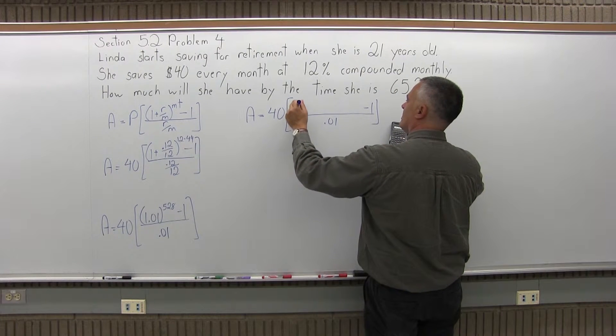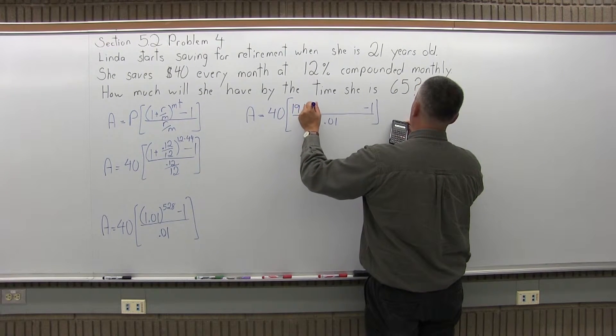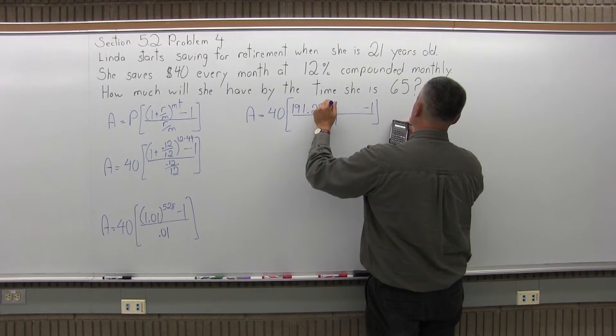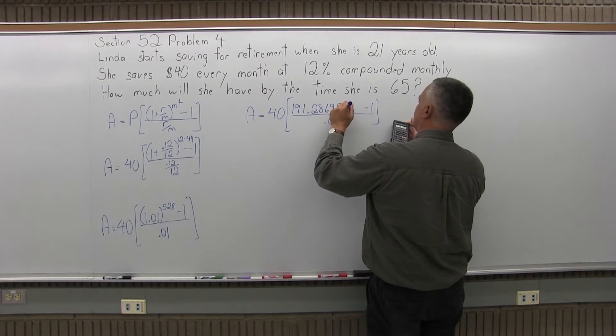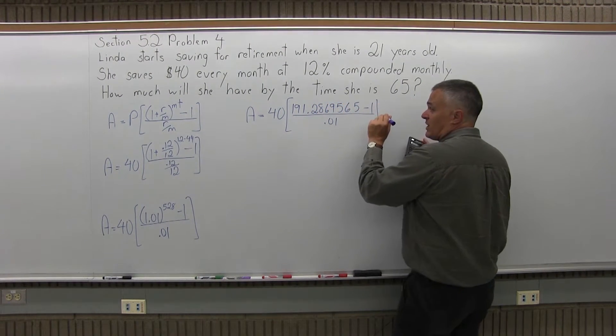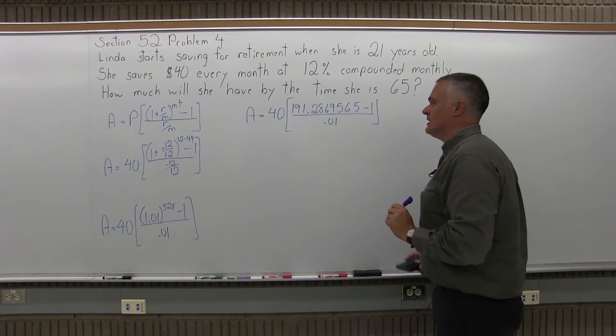the numerator is going to have 191.2869565. There's a minus 1 after that, and then a 0.01 in the denominator.